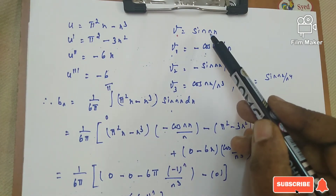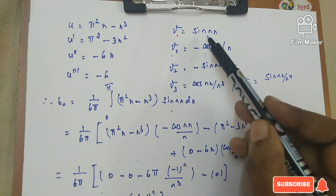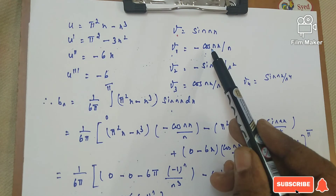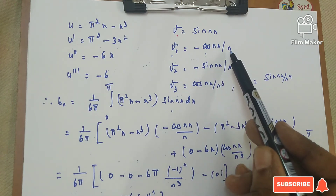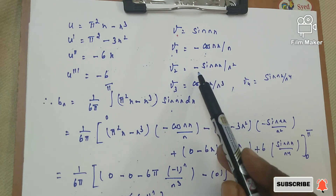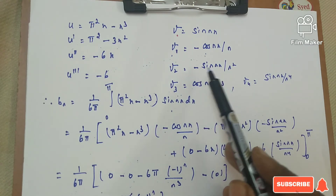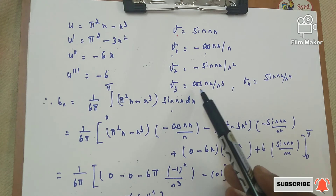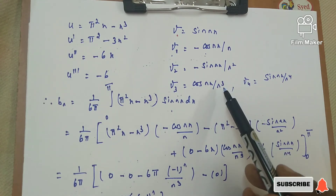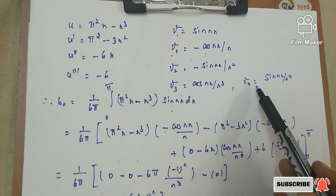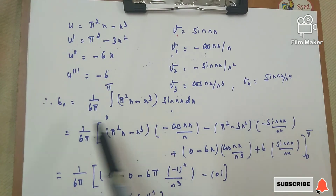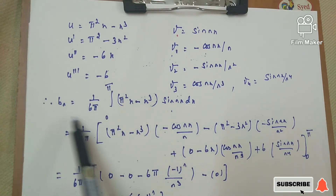For v = sin(nx), the successive integrations give: v₁ = -cos(nx)/n, v₂ = -sin(nx)/n², v₃ = cos(nx)/n³, and v₄ = sin(nx)/n⁴. Now we apply Bernoulli's formula: ∫uv dx = uv₁ - u'v₂ + u''v₃ - u'''v₄ + ...